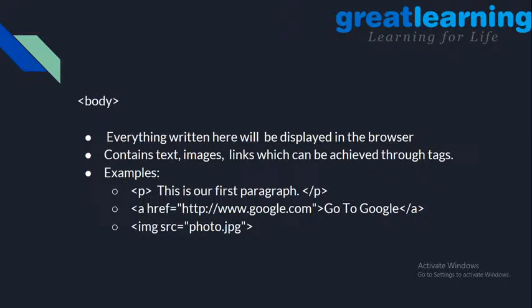The body tag is the most important tag — it is opposite to what the head tag does. Everything we write in the head tag never gets displayed, but everything we write in the body tag will always be displayed in the browser. It can contain text, images, links — everything, achieved by tags. For example, we can write a paragraph tag, use an anchor tag to link to Google, or include images with the image tag.